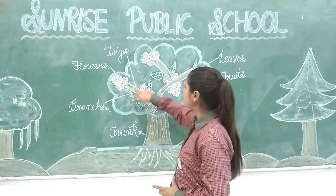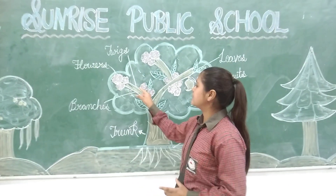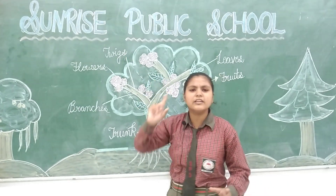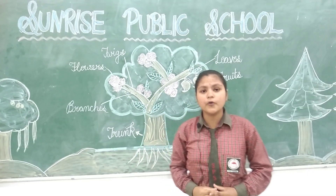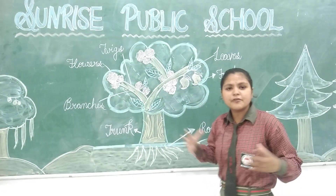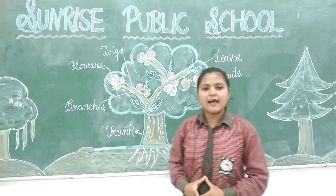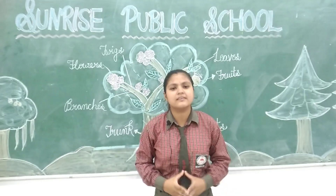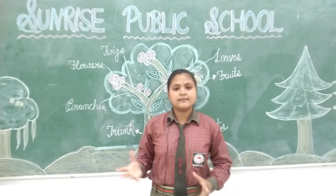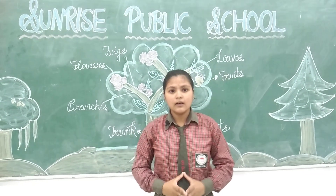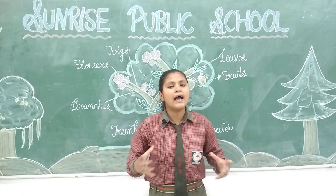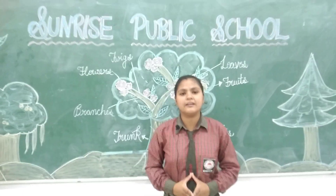Above the trunk, there are branches. These branches give way to the small twigs, and these twigs produce fruits and flowers. We ourselves and animals eat these fruits. The leaves exhale oxygen and inhale carbon dioxide.